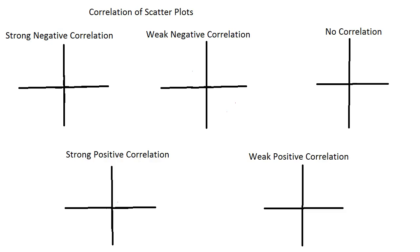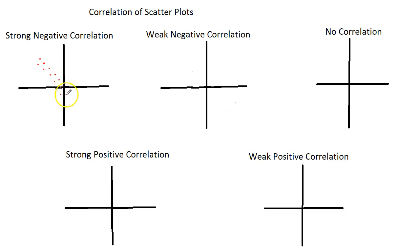We are looking at correlation of scatterplots today. Our first graph we are going to make is going to have strong negative correlation. What that means is the dots are very close together. They follow a negative pattern, but they are close — they don't spread out very far.